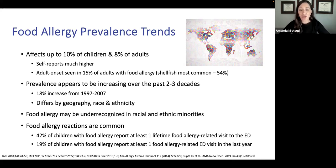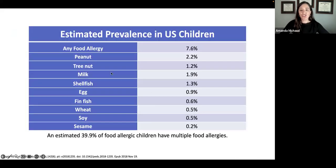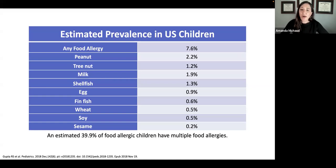Food allergy is very likely under-recognized in racial and ethnic minorities, and food allergy reactions are common — 42% of kids with food allergy have had at least one lifetime ER visit related to a food reaction, and 19% within the last year. The top nine allergenic foods include peanut, tree nuts, milk, shellfish, egg, fin fish, wheat, soy, and sesame — the most recently added. Peanut has the highest prevalence, and these nine foods represent over 95% of all food allergic reactions. Almost 40% of food-allergic children will have multiple food allergies.